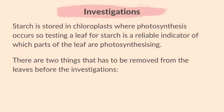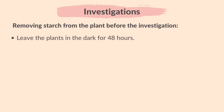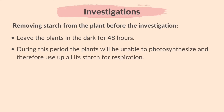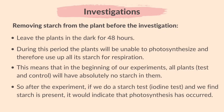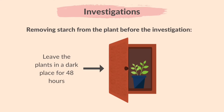There are two things that have to be removed from the leaves before the investigations: starch and chlorophyll. First of all, we are going to destarch all our plants by leaving the plants in the dark for 48 hours. During this period, the plants will be unable to photosynthesize and therefore use up all their starch for respiration. This means that at the beginning of our experiments, all plants — test and control — will have absolutely no starch in them. So after the experiment, if we do a starch test with iodine and we find starch is present, it would indicate that photosynthesis has occurred. Leaving the plants in a dark place will help remove all the starch from the plant.